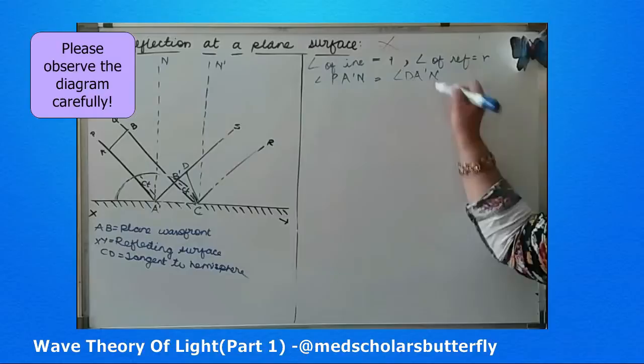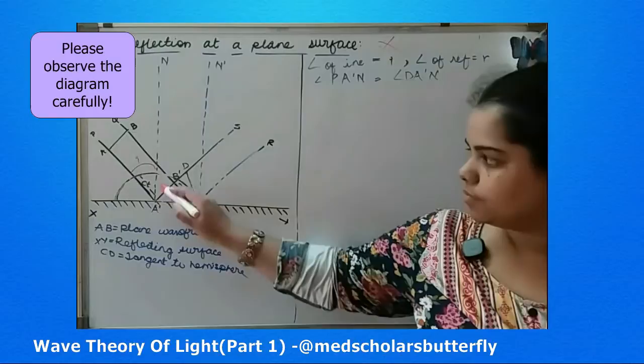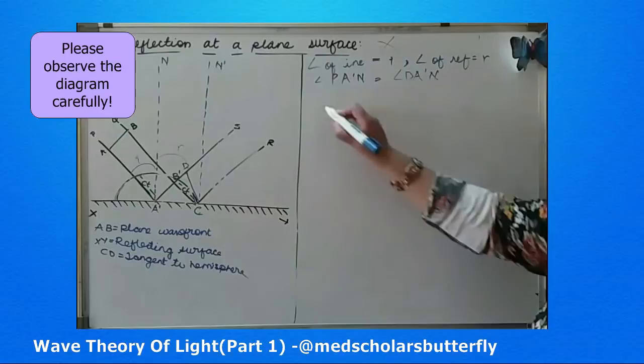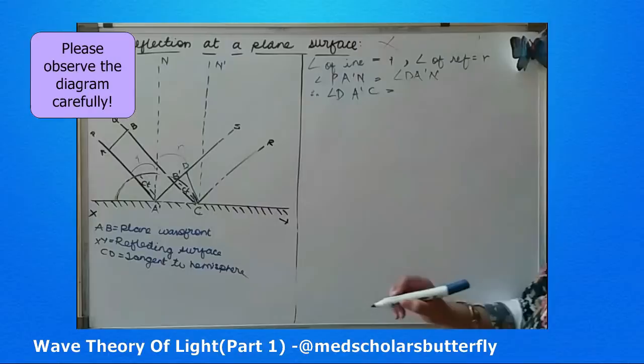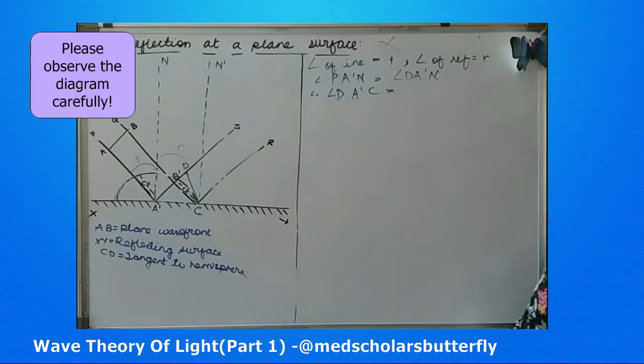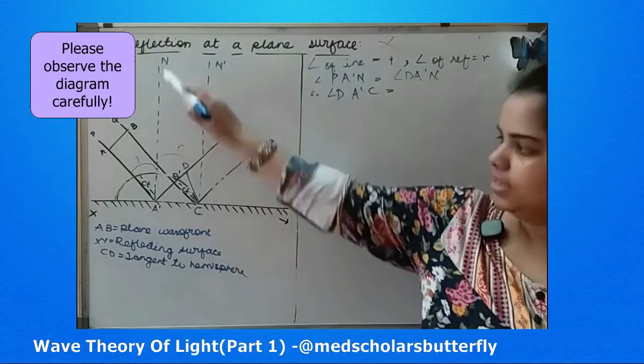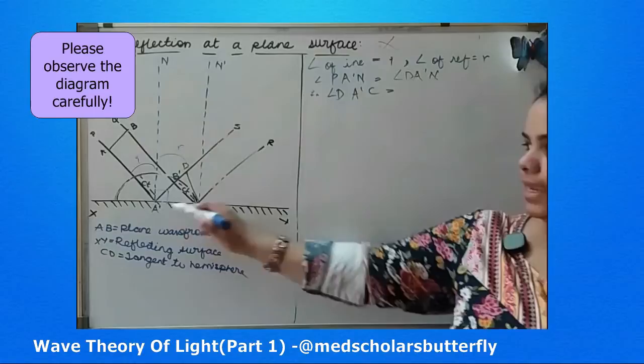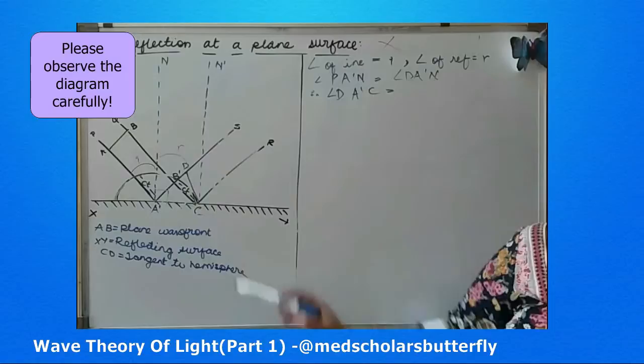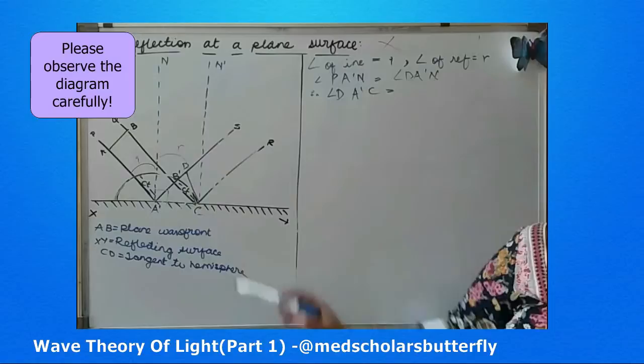Therefore, angle DAC will be nothing but 90 minus R. This whole angle NAC comprises of DAN and also DAC. So this will become 90 minus R — let us take it as equation number 1. From the figure, we know that angle DAC and angle NAB' are vertically opposite and angle DAC is nothing but 90 minus I. Let us take it as equation number 2.